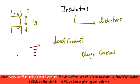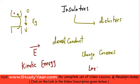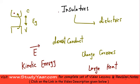Now these electrons gain a huge amount of kinetic energy. They collide with each other and with the other immobile ions, and a large amount of heat is produced. Because of this heat, your insulator basically melts away or is destroyed.